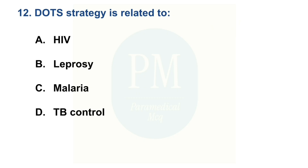DOTS strategy is related to. Option A: HIV. Option B: Leprosy. Option C: Malaria. Option D: TB control. The correct option is Option D — TB control.